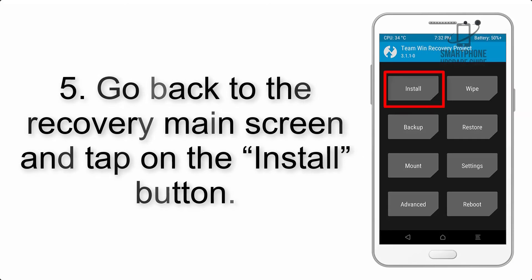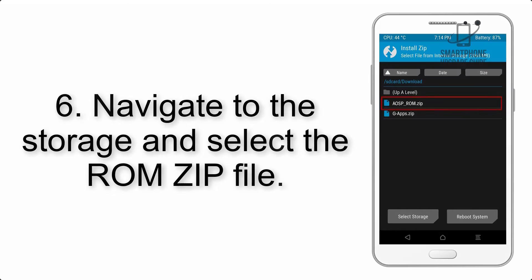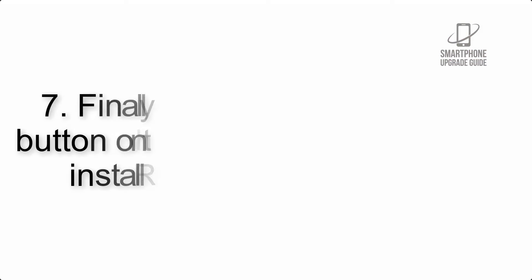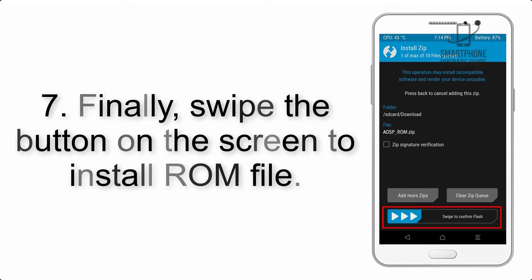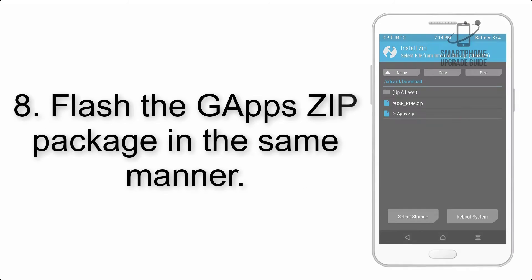Step 5: Go back to the recovery main screen and tap on the Install button. Step 6: Navigate to the storage and select the ROM zip file. Step 7: Finally, swipe the button on the screen to install the ROM file.